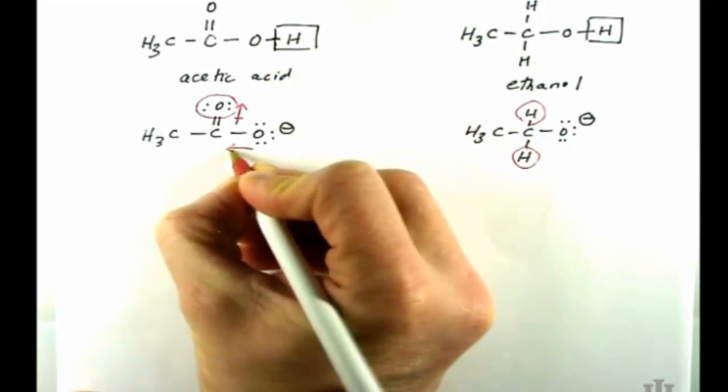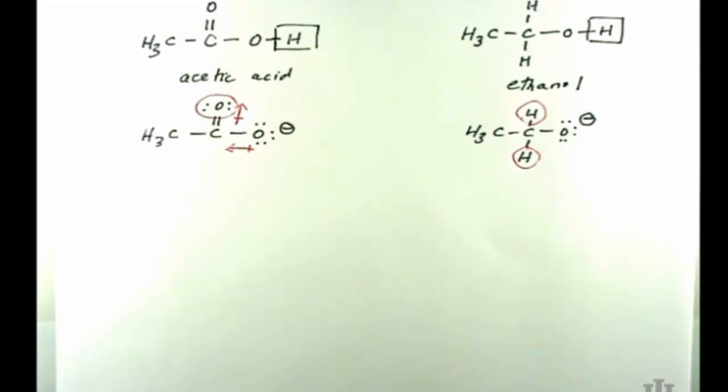If it pulls it away from the carbon that the oxygen is attached to, that carbon is going to try to recover some of the lost electron density by pulling it from its neighbors. If it was more distant it would do it a little bit from its neighbors as well. It just keeps passing it down the line.